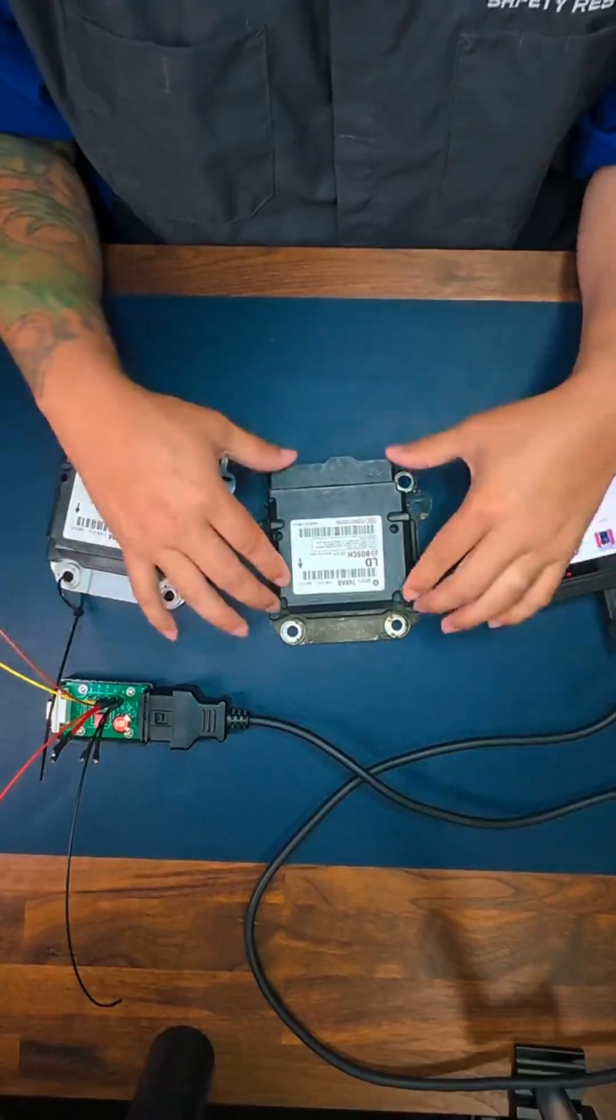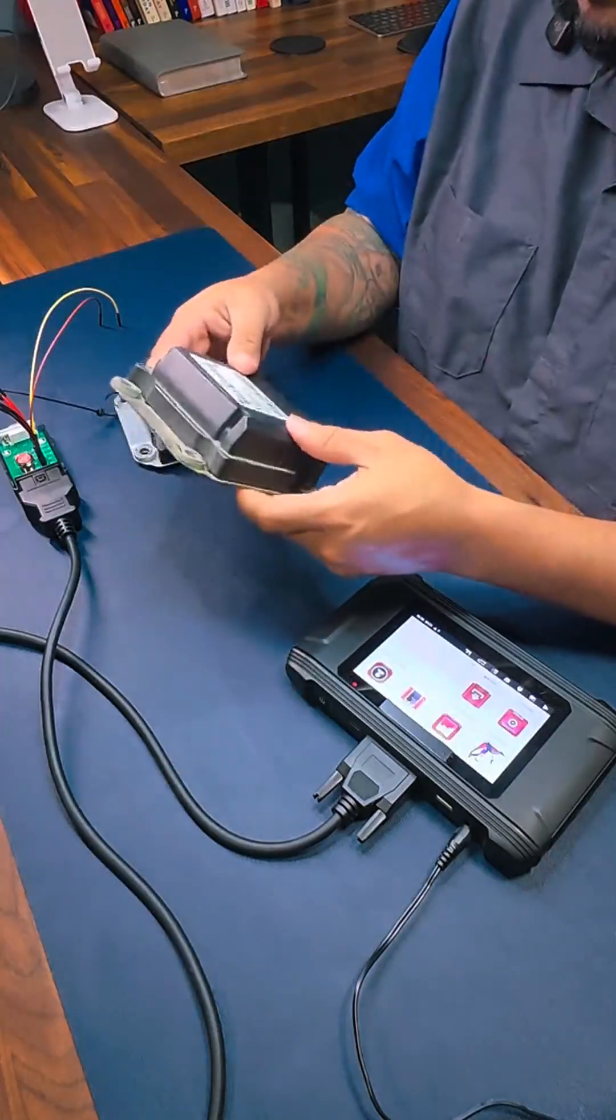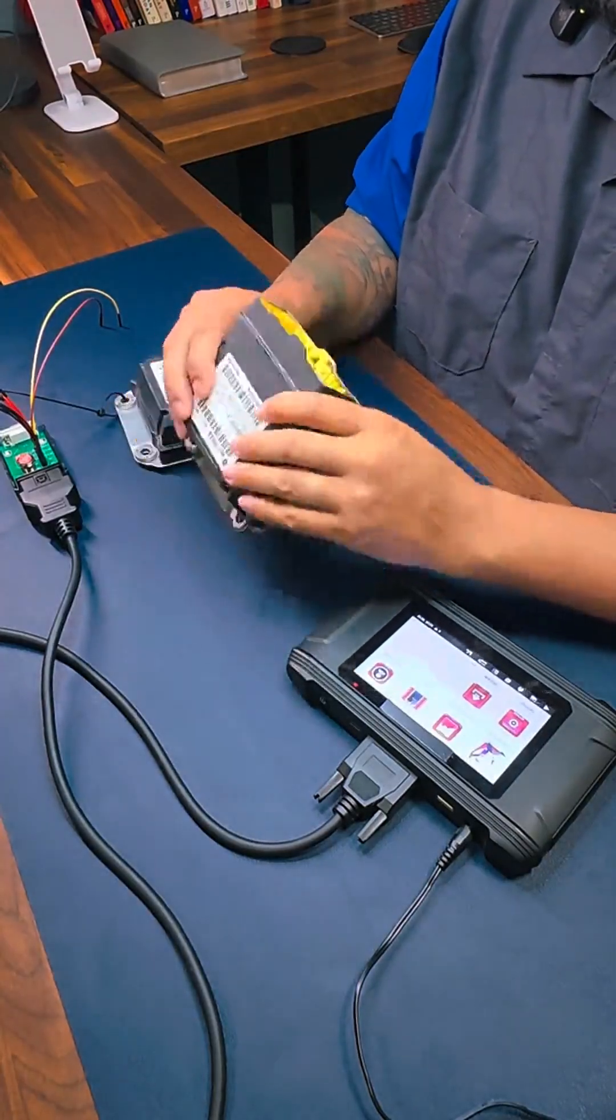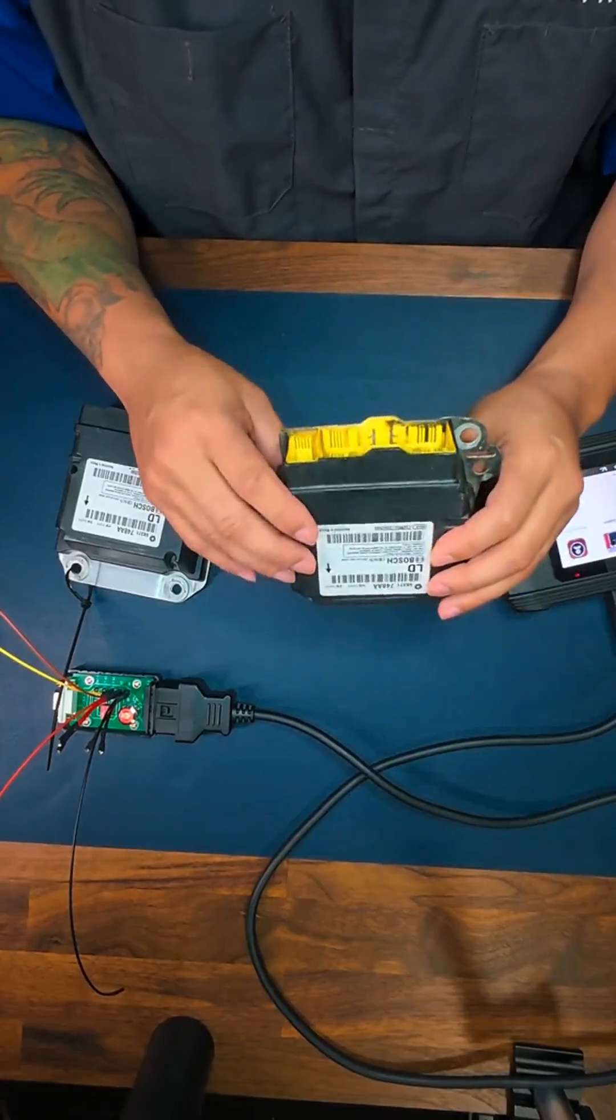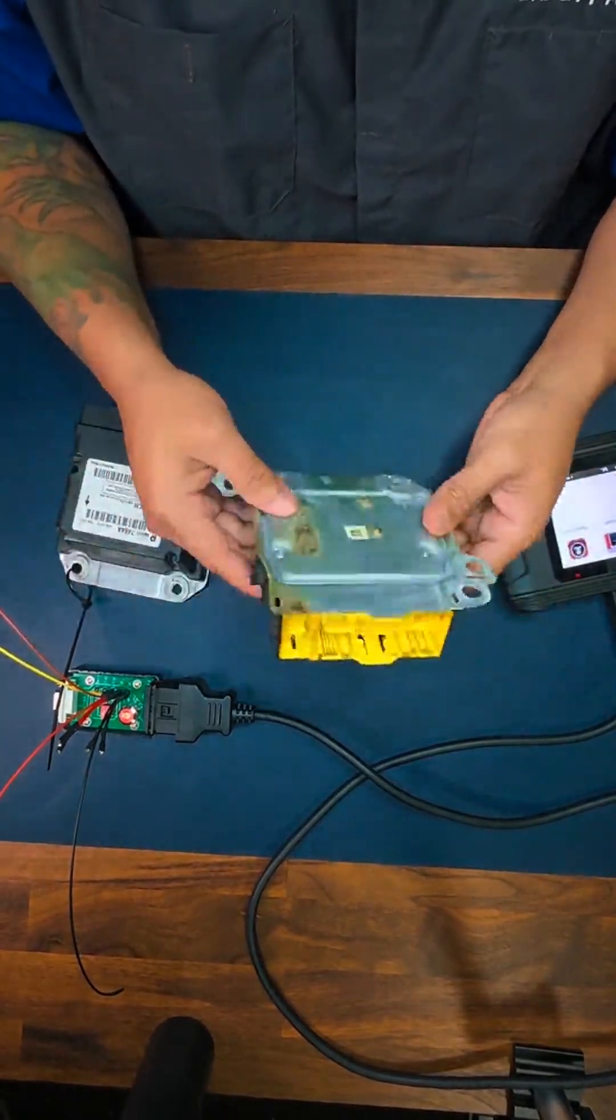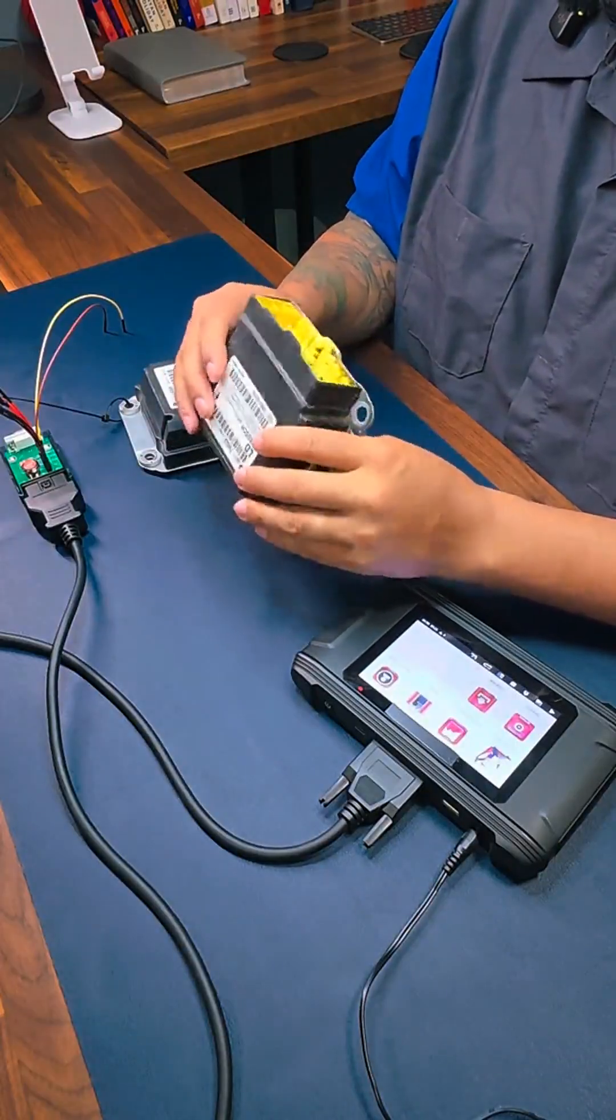Today we're going to be talking about how to reprogram a new airbag module. This particular airbag module is for a 2018 Dodge Charger. Eight out of ten times we can do the reset without actually having to replace the module, but in this case it's in bad shape. It is damaged. This module is damaged and cannot be reset.